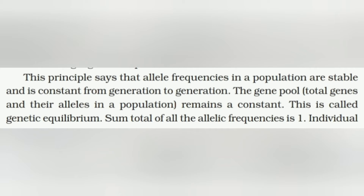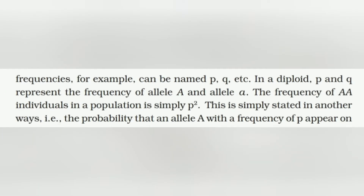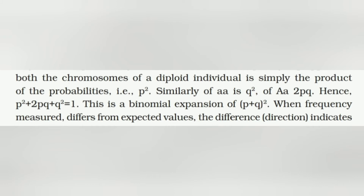The sum total of all allelic frequencies is 1. Individual frequencies can be named p and q. In a diploid, p and q represent the frequency of allele A and allele a respectively. The frequency of AA individuals in a population is p², because the probability that allele A with frequency p appears on both chromosomes of a diploid individual is simply the product of the probabilities — that is, p². Similarly, aa is q², and Aa is 2pq. Hence, p² + 2pq + q² = 1, which is the binomial expansion of (p + q)².